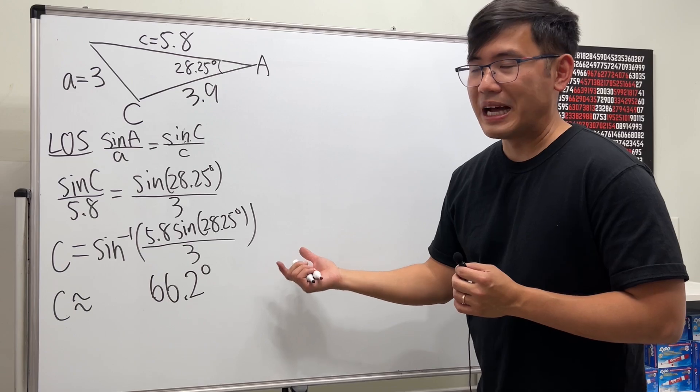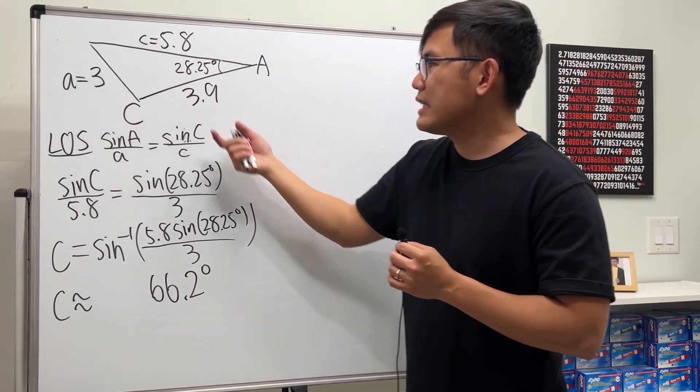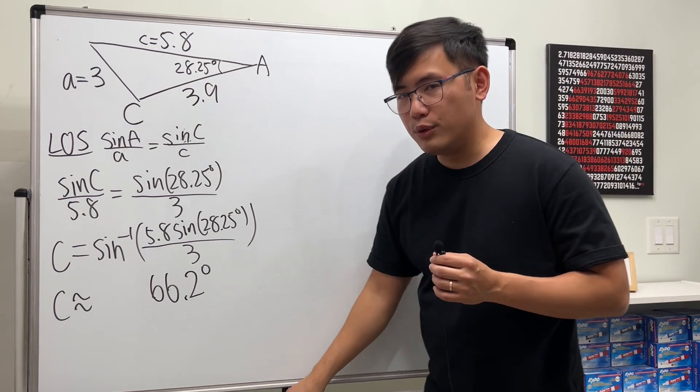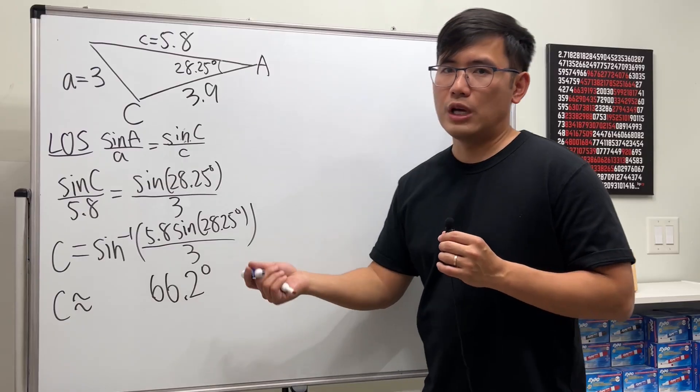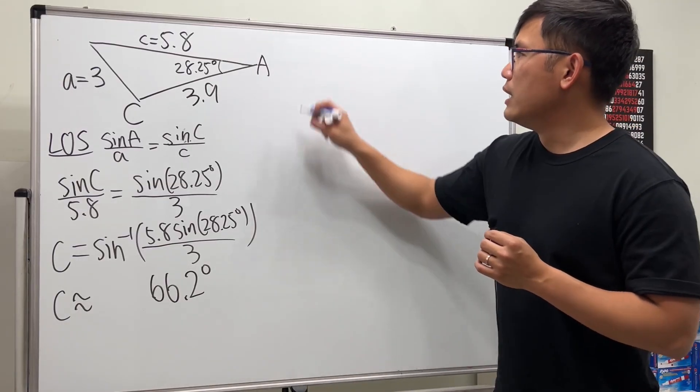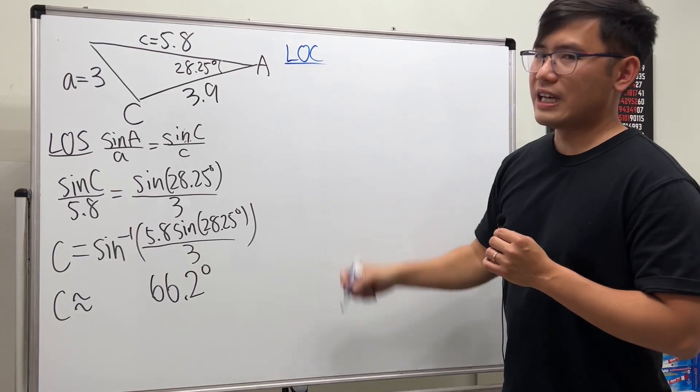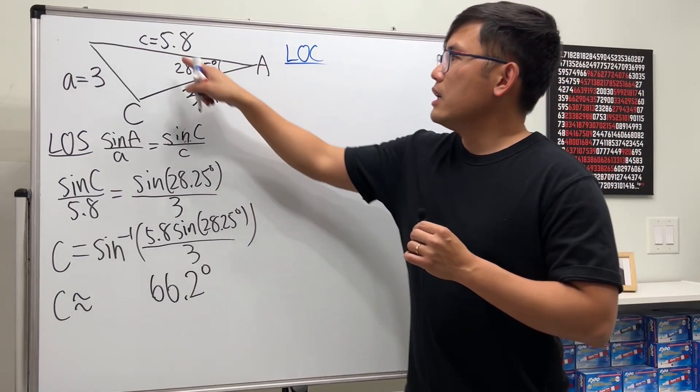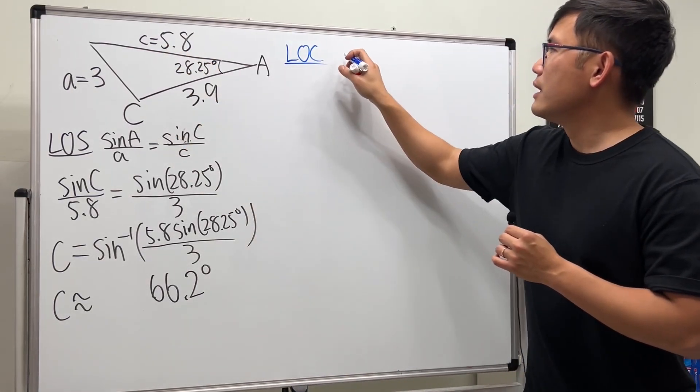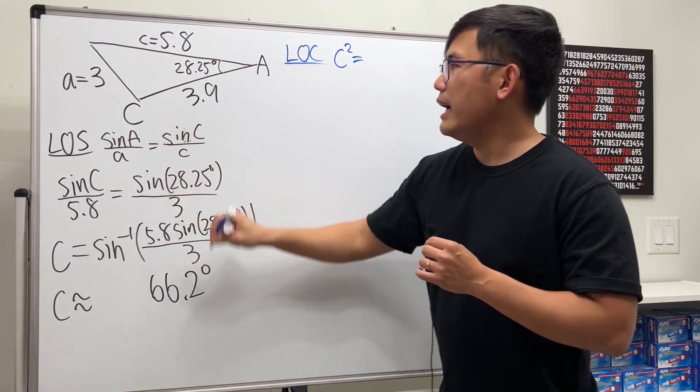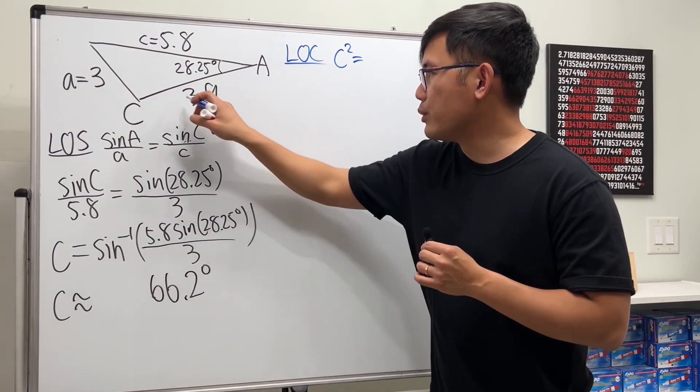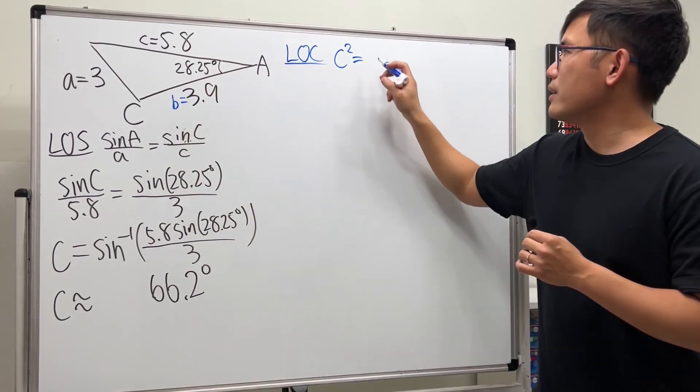Well, I told you guys earlier that because we have all three sides, in fact, we could also have used the law of cosine to help us out. So let's try that as well. So this right here is for the LOC, namely law of cosine, which says this little c right here, if you square that, it's equal to a squared. And I'm just going to call this little b right here. So little b squared.